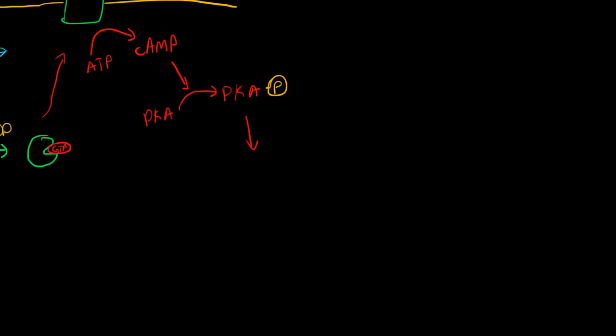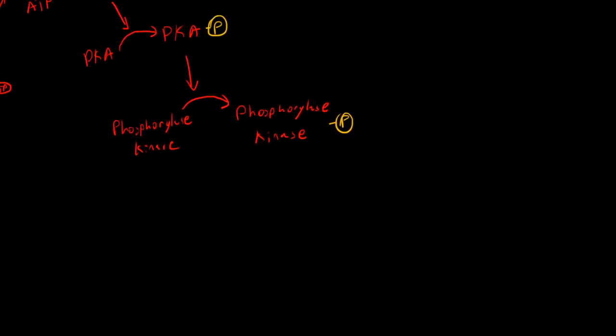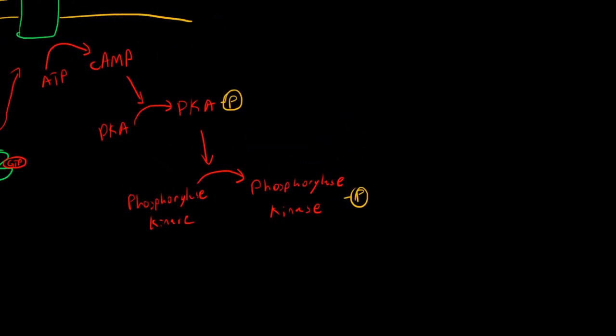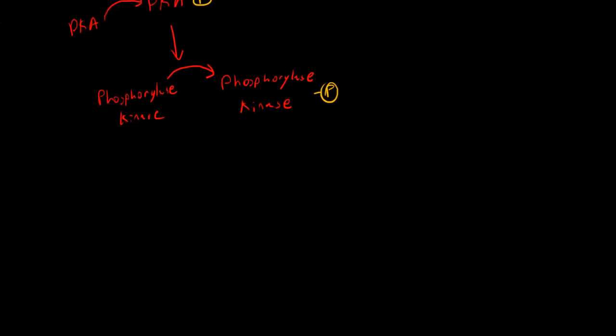Protein kinase A is a super general protein kinase - it's going to phosphorylate a lot of different things. The main one for this pathway is phosphorylase kinase. When this kinase was first discovered in this pathway, it was kind of jokingly but not so jokingly called the phosphorylase kinase kinase until it was discovered that it phosphorylates a ton of different things.